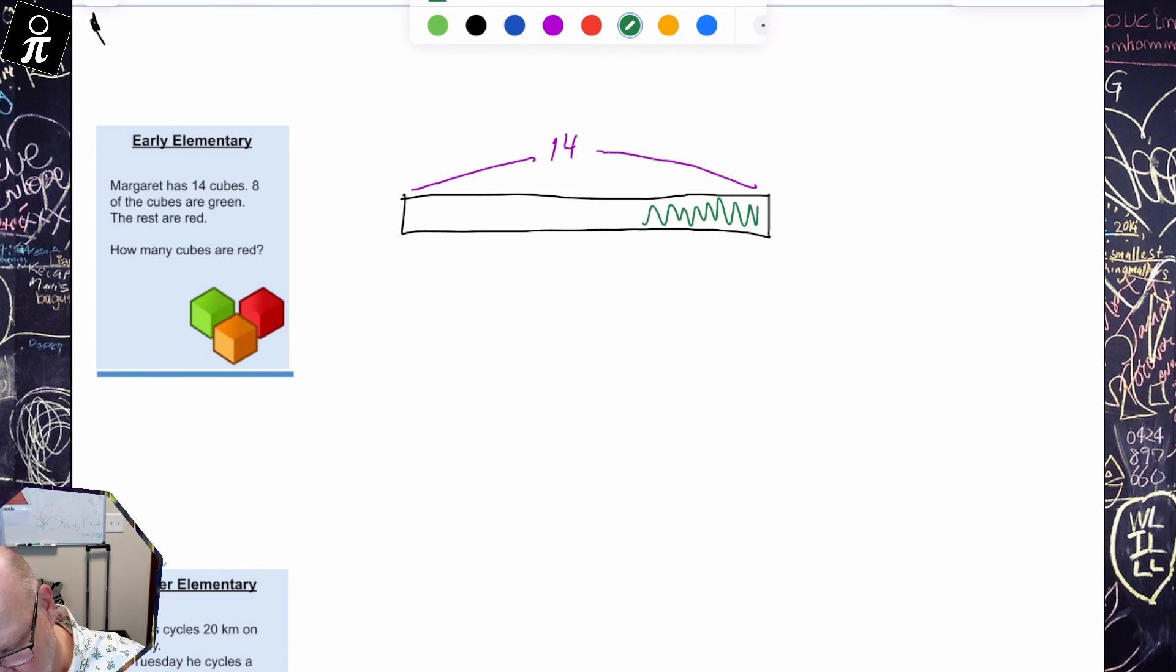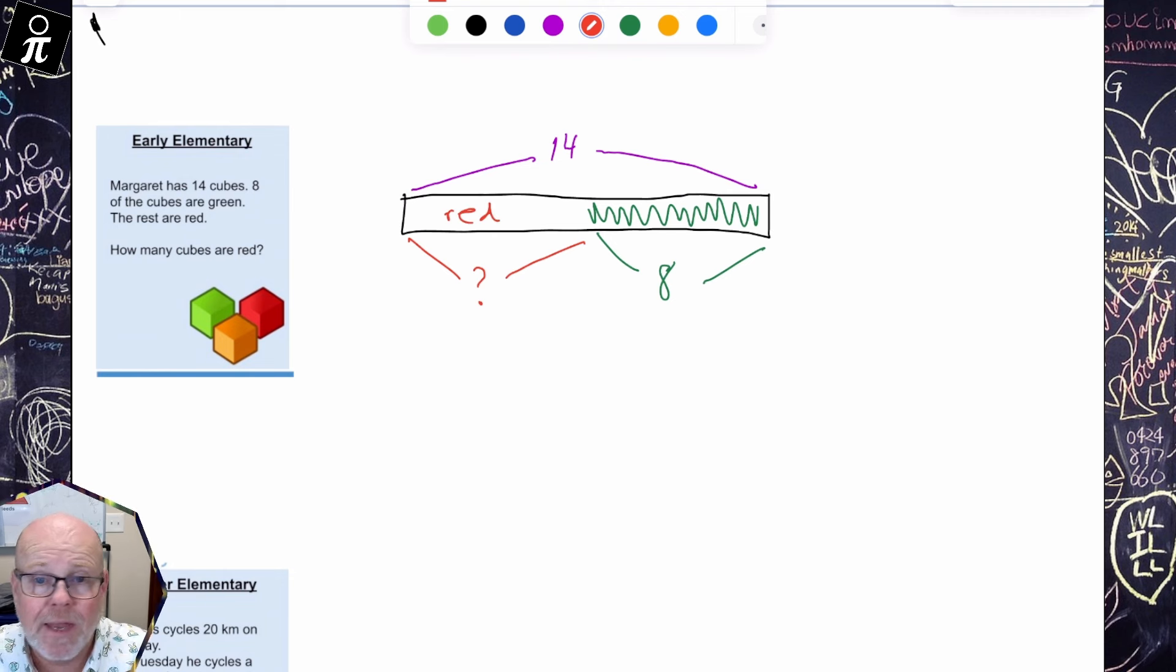Eight of the cubes are green. So this whole tape right here represents the 14. Eight of those cubes, and I'll just make this the eight, are green. And it says the rest are red. So I'm gonna say this part is the red right here. And then that's my model. Does it matter that it's not totally perfectly drawn in proportion? Nope, doesn't matter one bit. We're just using this tape diagram to help students understand what the math is, what the story is talking about. So in this case, we can see that we need to do 14 take away eight to give us six, and it is six reds, which is our problem.